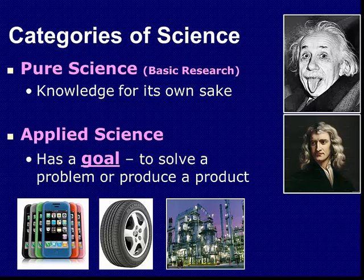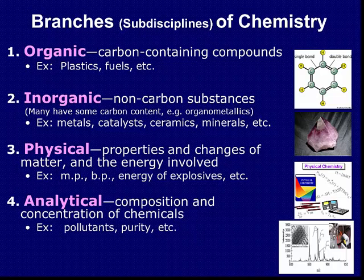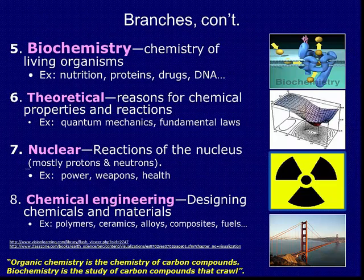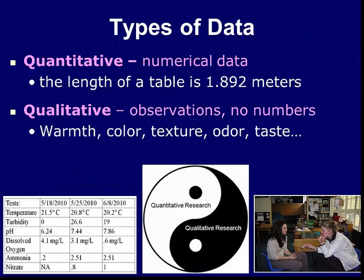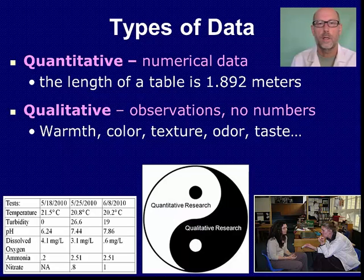Let's recap what we did today. We looked at the categories of science: pure science, which is knowledge for its own sake, and applied science, where we have a goal to build something, produce a product, or solve a problem. We also looked at the eight branches of chemistry: organic, inorganic, physical, analytical, biochemistry, theoretical, nuclear chemistry, and chemical engineering. Finally, we covered the two types of data — quantitative and qualitative. Thank you for listening, and if you have any questions, feel free to stop in, email me, or give me a call.